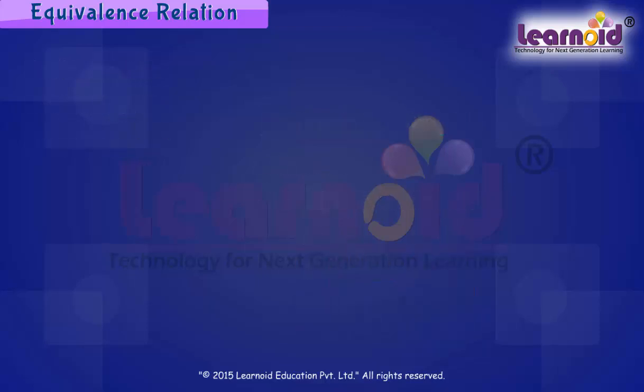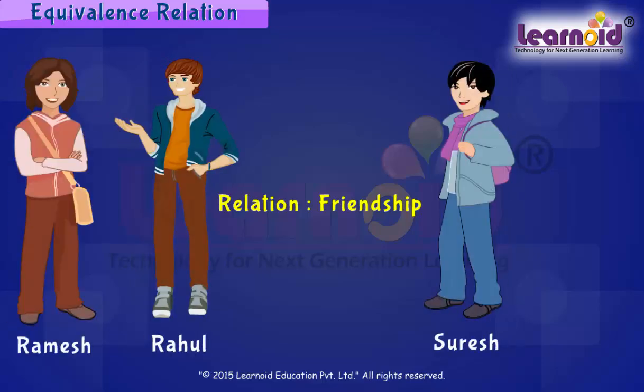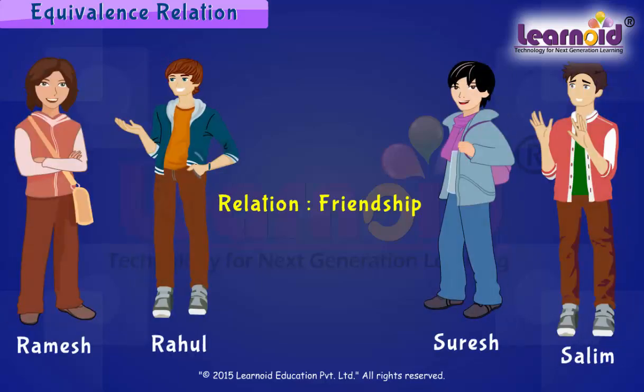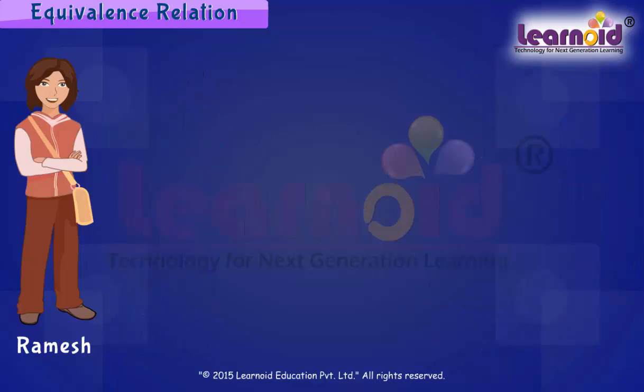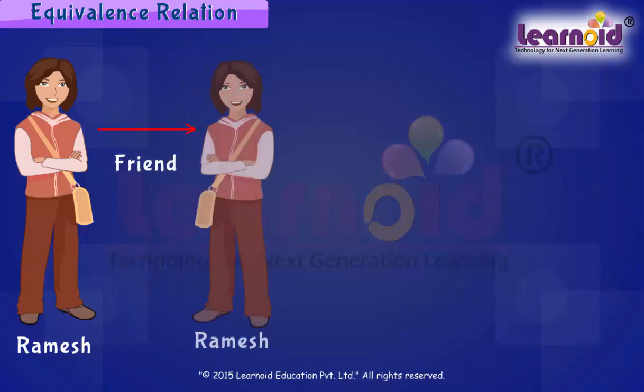If we define a relation of friendship on a set B of four boys — Ramesh, Rahul, Suresh, and Salim — we can see that Ramesh is a friend of himself. In fact, everyone is a friend of himself, so this relation of friendship on set B is reflexive.